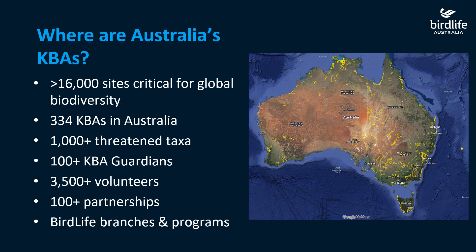So where are Australia's key biodiversity areas? There are over 16,000 KBA sites across the world, and in Australia we currently have 334 key biodiversity areas. The KBA program is currently undergoing a review to ensure we are protecting the best hotspots for nature. The KBA program is not static — it's evolving and depends entirely on getting the best information and data from our wonderful volunteers and staff members, so that we can make decisions about where our KBAs should be.